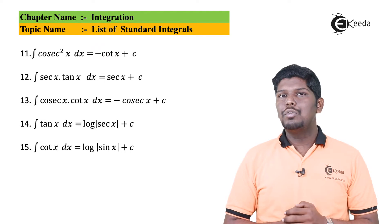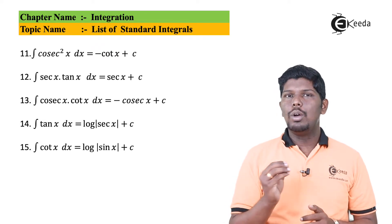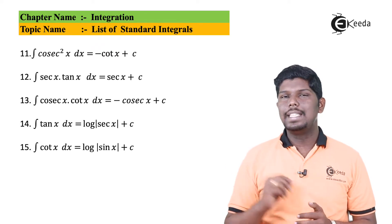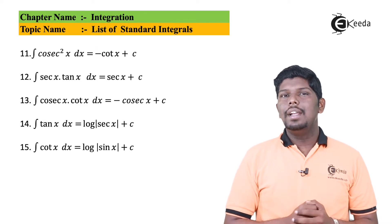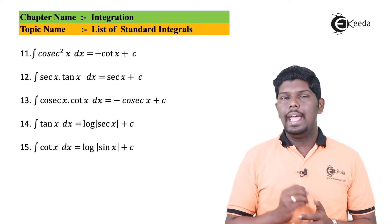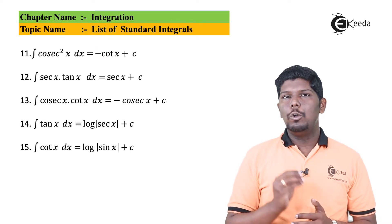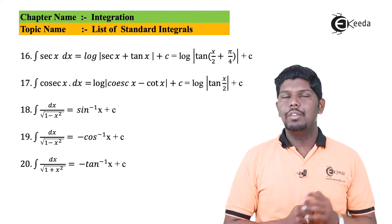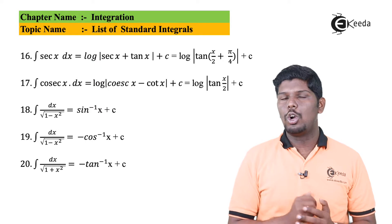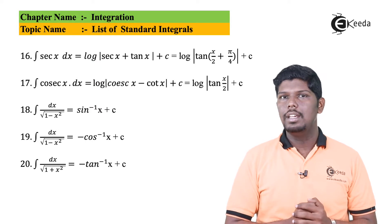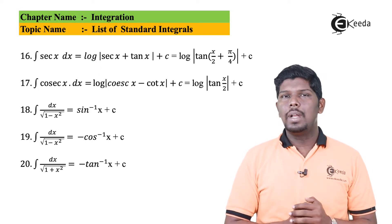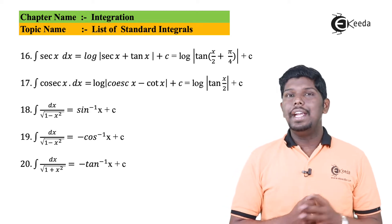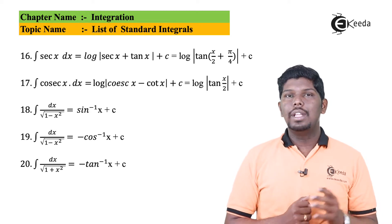Integration of sec x equals log of sec x plus tan x plus c, while the alternate formula is log of tan(π/4 + x/2) plus c. Similarly, integration of cosec x gives log of cosec x minus cot x plus c, while its alternate formula is log of tan(x/2) plus c.